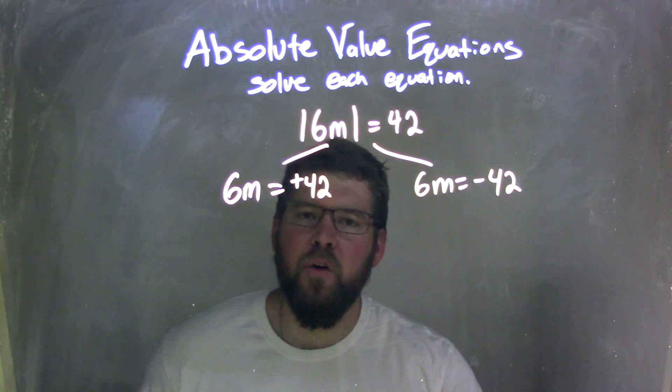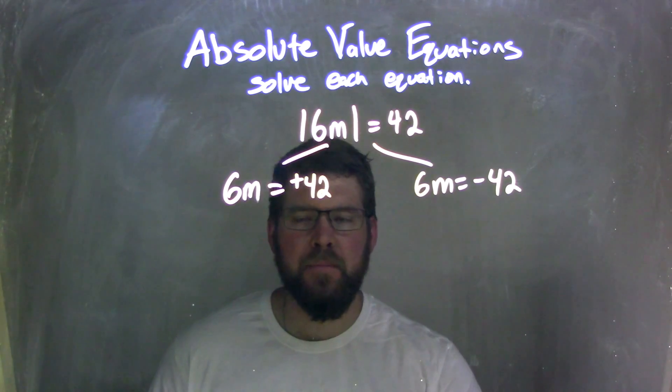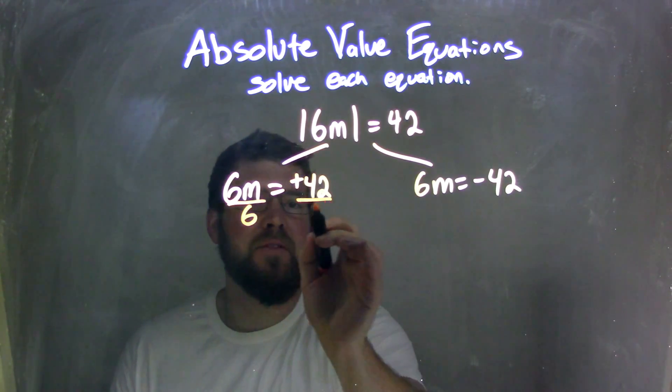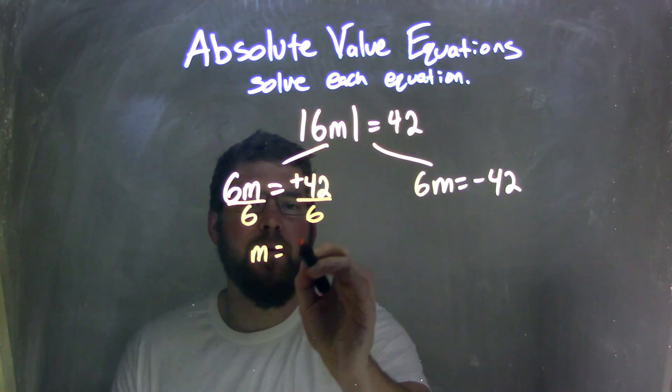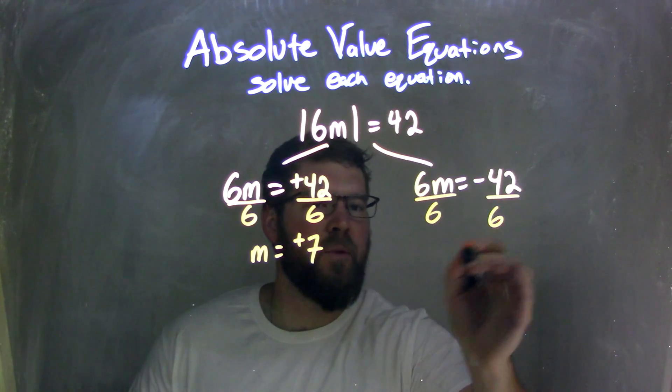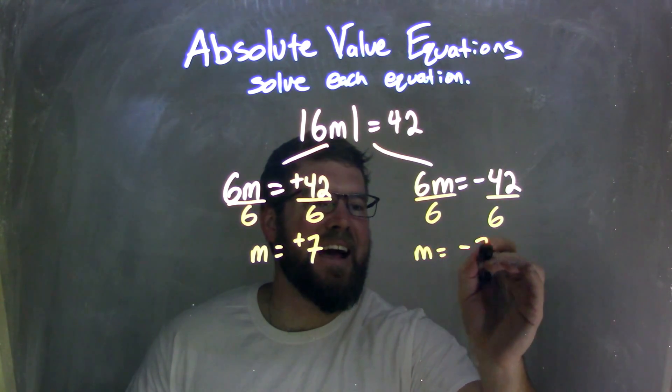And now we have to solve each part individually. So first step here, I'm going to see times 6, I'm going to divide by 6 to both sides. And we're left with m equals a positive 7. And here, I'm going to divide by 6 to both sides as well, and I have m equals a negative 7.